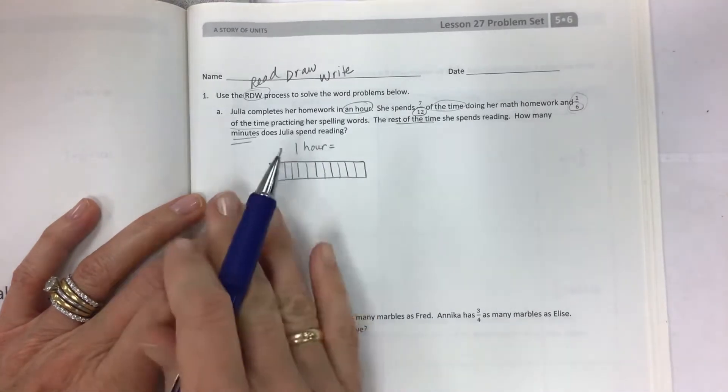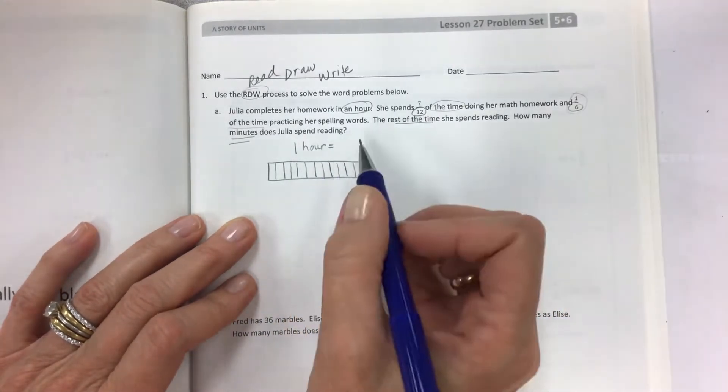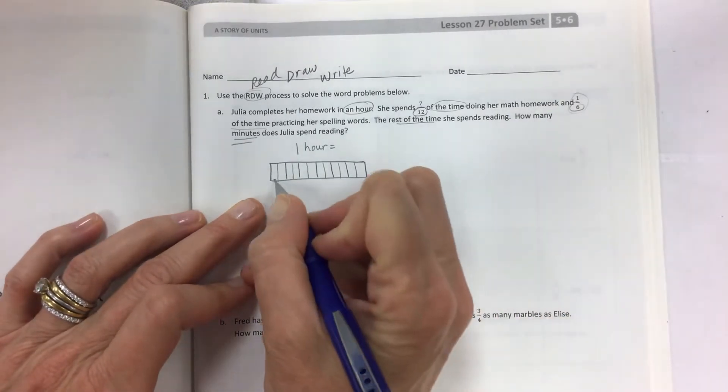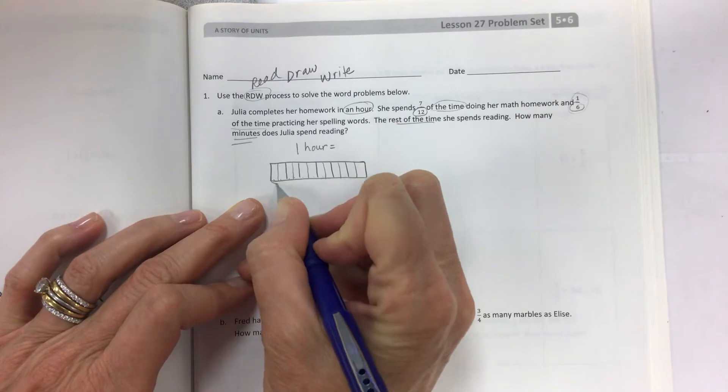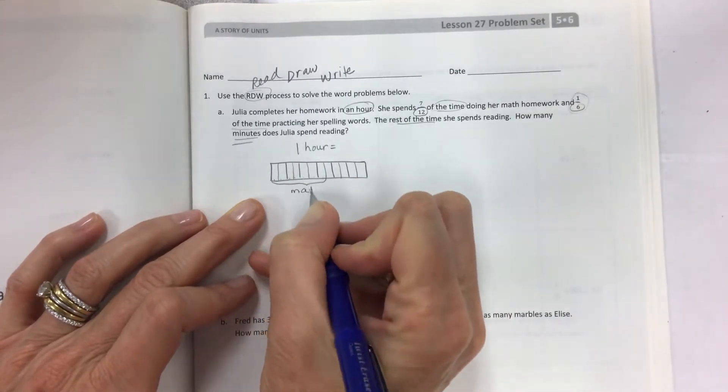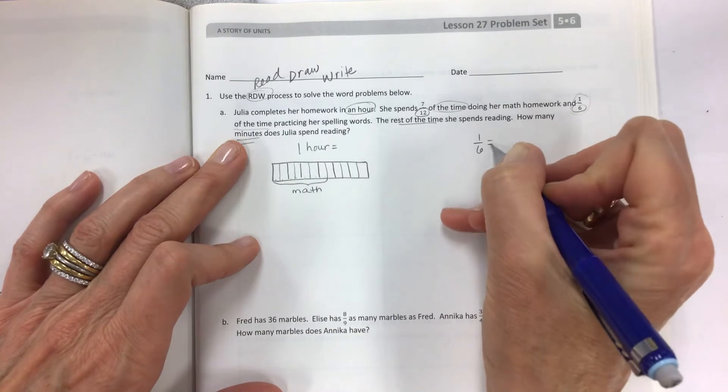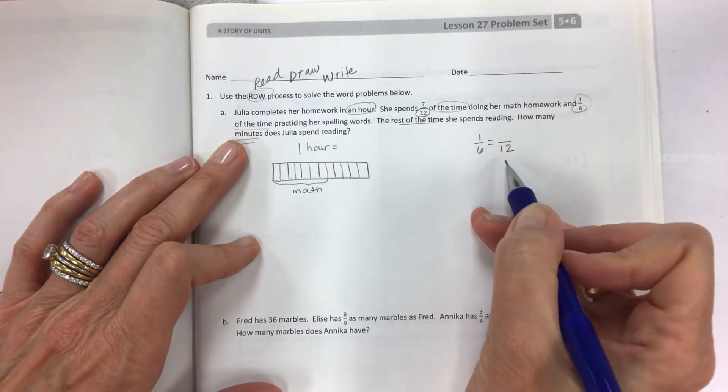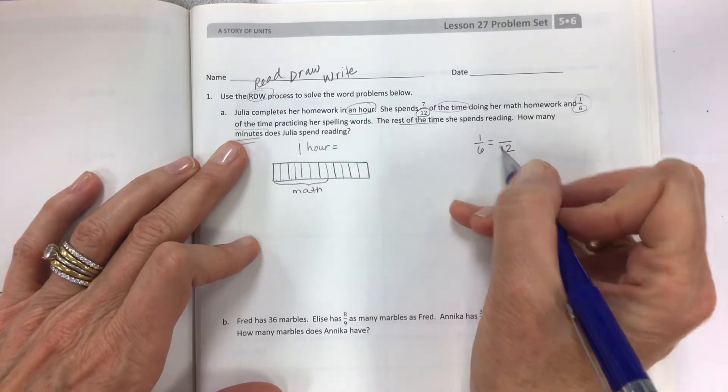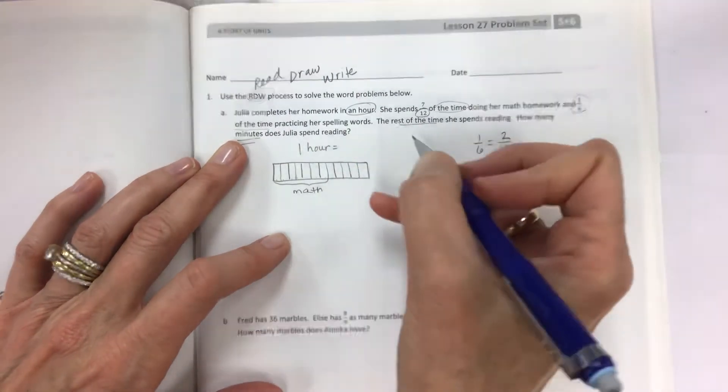Always remember with even numbers just split it in half and then make the even number of pieces. So seven twelfths of the time doing math homework: one, two, three, four, five, six, seven for math. And then one sixth of the time. Now one sixth is equal to how many twelfths? Find the missing factor. What you do to the bottom you do to the top and vice versa. If this is six times two, it's one times two, so we need two twelfths that would show the spelling. So take two of the twelfths to show the spelling.